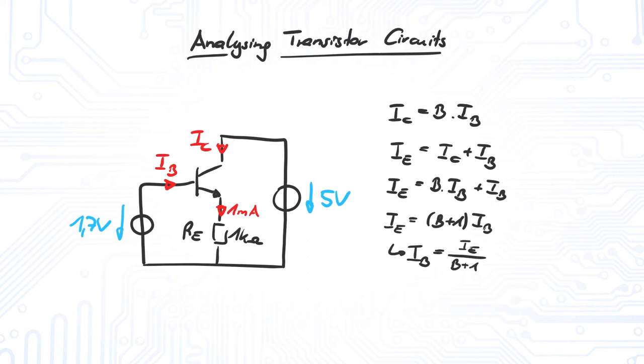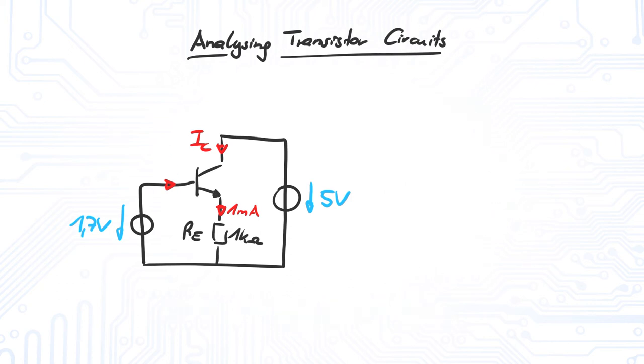If we search the datasheet of our transistor, we would get the value for the current gain beta. For now, we set beta to 99. This gives a base current of 10 microamps. And finally, we are able to solve for the collector current IC, which we could get by either the difference IE minus IB or by the current gain.